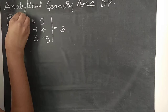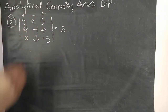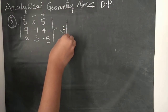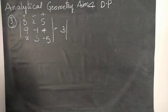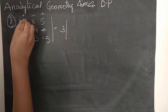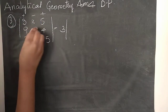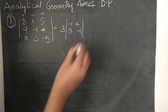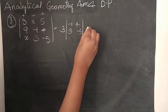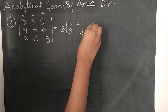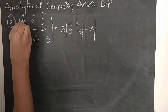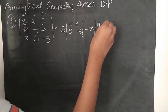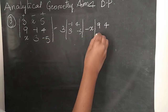First, take 3 with plus sign. This row and column are not considered. So minus 1, 4, 3, minus 5. Minus x: this row and column not considered — 9, 4, x, minus 5. Clear.